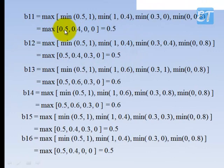The minimum values are 0.4, 0, and 0. Then we need to find the maximum amongst these values, which is 0.5. So B11 is 0.5.